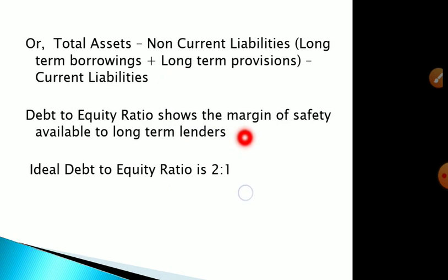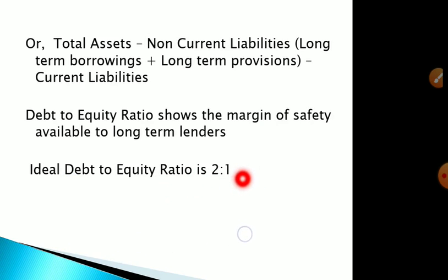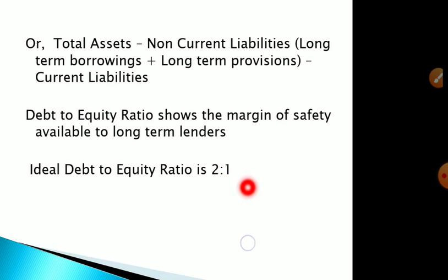Debt to equity ratio shows the margin of safety to long-term lenders, indicating whether their principal and interest amounts are safe. The ideal debt to equity ratio is 2:1, meaning if equity is 100, the company can take debt of 200. If the ratio is higher, the financial position is risky; if it is lower, the company has a safer financial position with less debt.